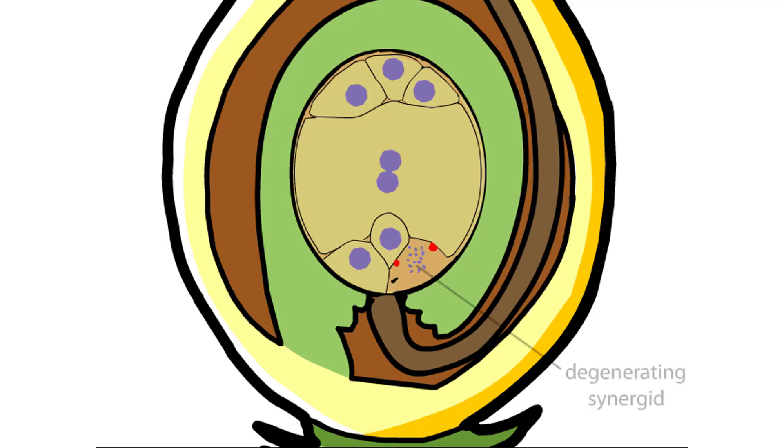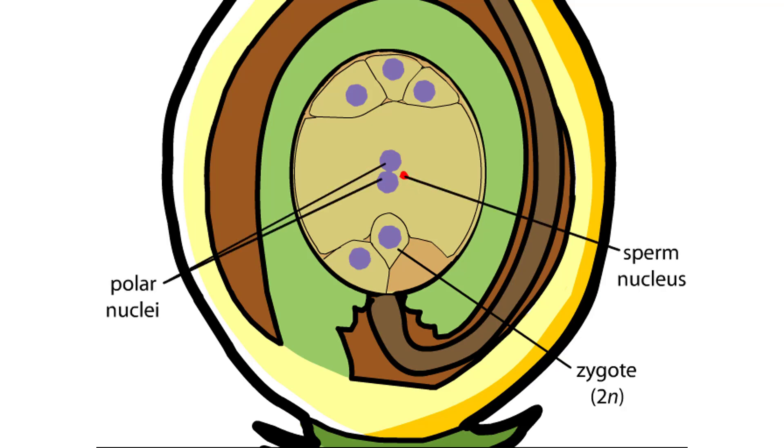The synergid degenerates as one of the two sperm cells fertilizes the egg cell, producing a diploid zygote. The second sperm cell fuses with both of the polar nuclei, fertilizing them to produce an unusual triploid cell.